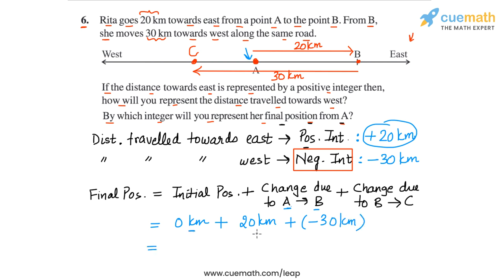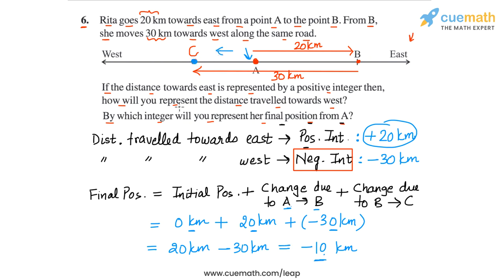Ignoring the 0, we get 20 km plus minus 30 km, which we write as 20 minus 30, giving minus 10. So the final position is minus 10 km, which means the final position is towards the west of A. Since the position is negative, point C is to the left of A, as we can see in the figure. The second part of the answer is that the final position can be represented as minus 10 km.